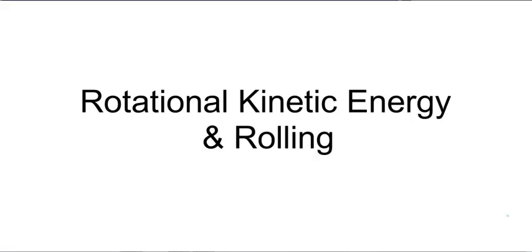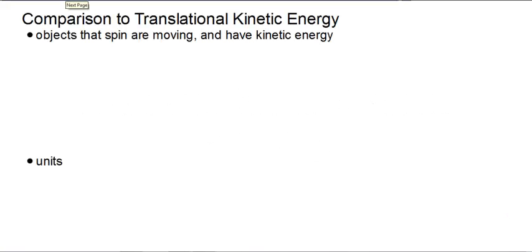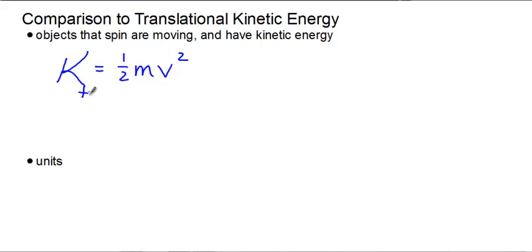Today we're going to discuss rotational kinetic energy and rolling. When you have an object that's spinning, even if it's spinning in place, it is still moving. Because of that, it still has kinetic energy. Remember that our equation for kinetic energy for a linearly moving object is ½mv². We're going to call that translational kinetic energy, K-trans. In addition to K-trans, we're also going to have K-rot, or K-rotational.